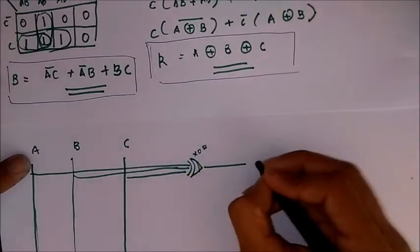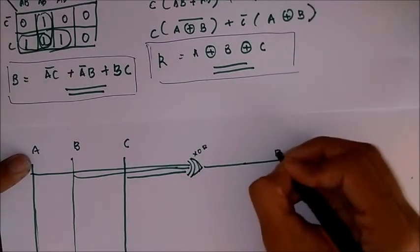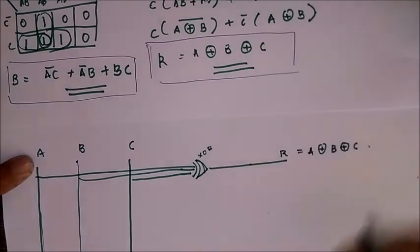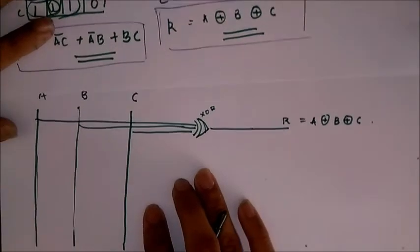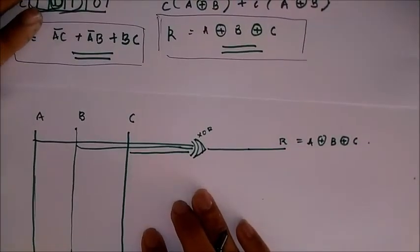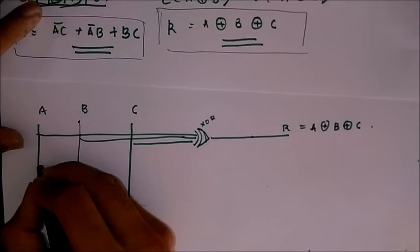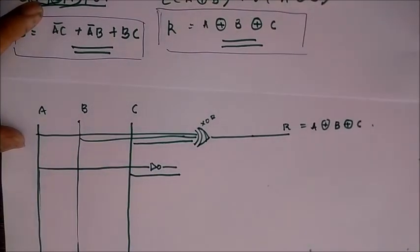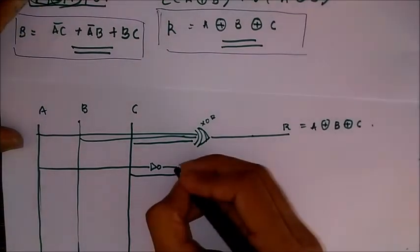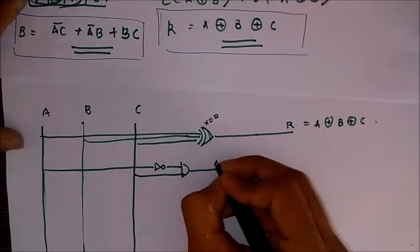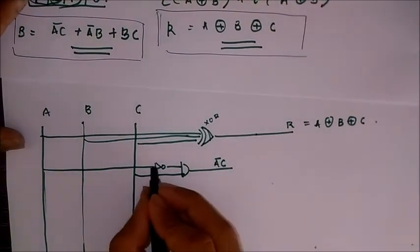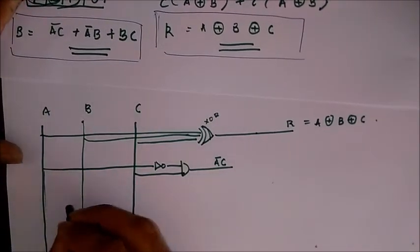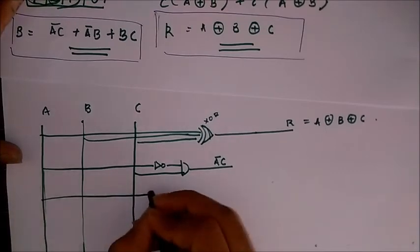And that is our result is equal to A XOR B XOR C. Now for the borrow we have A bar C, that is A bar C right, A bar because of the OR gate and that is multiplied by an AND gate, so then A bar B.